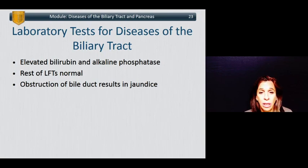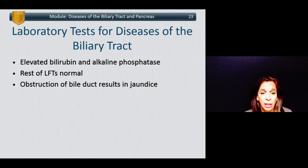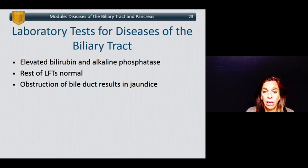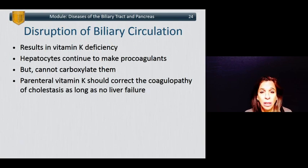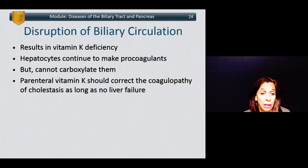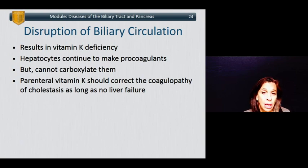For laboratory tests in diseases of the biliary tract, patients typically have elevated bilirubin and alkaline phosphatase, but the transaminases are normal. Obstruction of the bile duct typically results in jaundice unless relieved expeditiously. Disruption of biliary circulation can result in vitamin K deficiency. Hepatocytes continue to make procoagulants but cannot carboxylate them. Parenteral vitamin K should correct any coagulopathy of cholestasis, as long as the liver itself does not have disease.